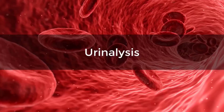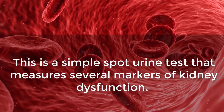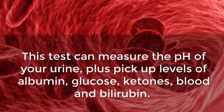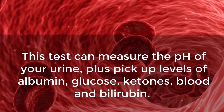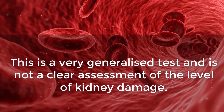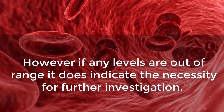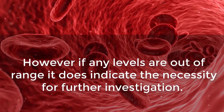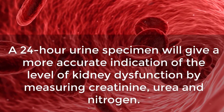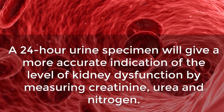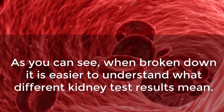You need the correct level of stomach acid to absorb iron, so you may need to take a stomach acid tablet at the same time to enhance absorption. Urinalysis is a simple spot urine test that measures several markers of kidney dysfunction, including the pH of your urine plus levels of albumin, glucose, ketones, and blood. This is a generalized test, and a 24-hour urine specimen will give a more accurate indication of kidney dysfunction by measuring creatinine, urea, and nitrogen.